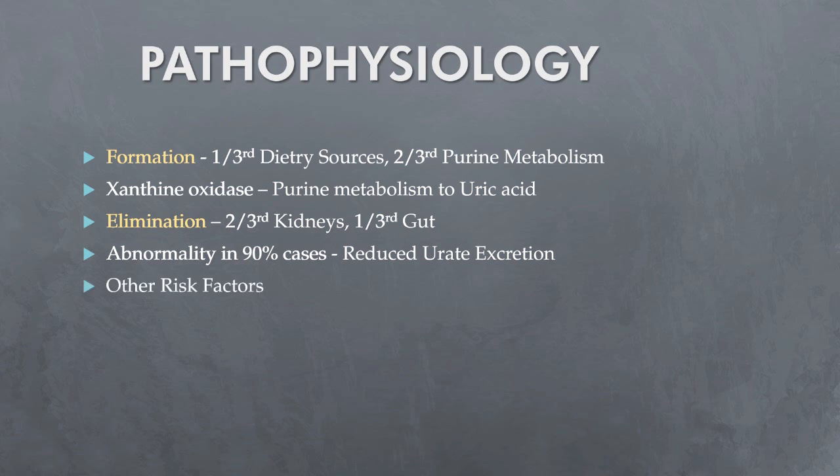Other risk factors for gout include metabolic syndrome, high alcohol intake — predominantly beer — generalized osteoarthropathy, and a diet relatively high in offal, seafood, red meat, and fructose, or a diet low in vitamin C. The association between osteoarthritis and gout is thought to be due to reduction in the levels of proteoglycan and other inhibitors of crystal formation in osteoarthritic cartilage, predisposing to crystal formation.